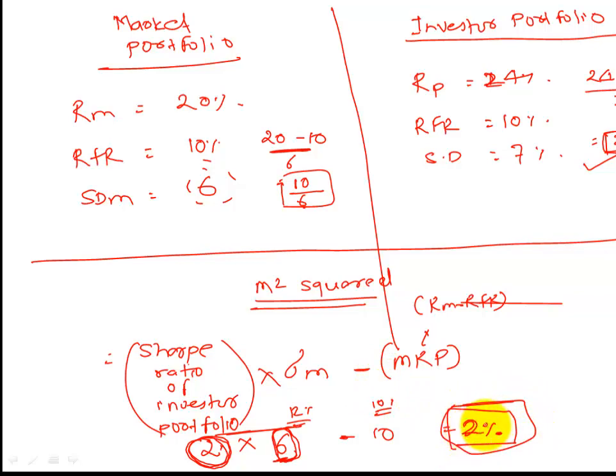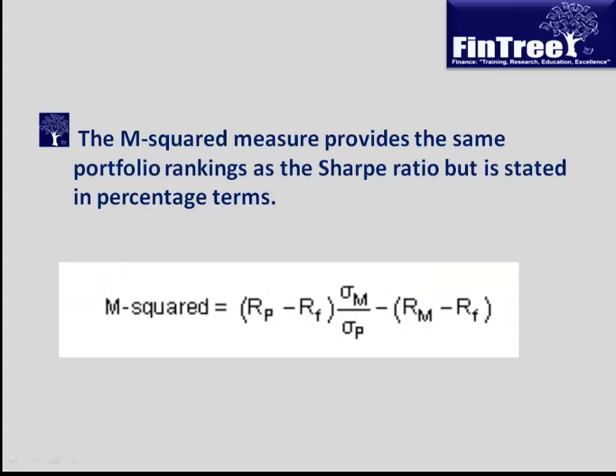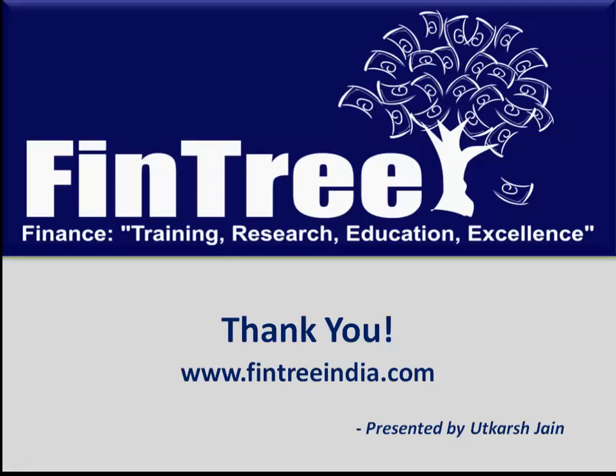If you just want to cross-check this intuition, if you take this 2% and add to the return of market, which would make this 22%, and then you calculate a Sharpe ratio, it would say 22, which is return on market, minus 10, divided by 6, which is 2. A simple meaning of this number is how much markets have earned less compared to your performance on a risk-adjusted basis. This is Utkarsh Jain, thank you very much for your time.